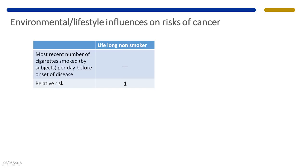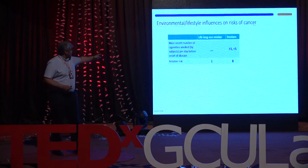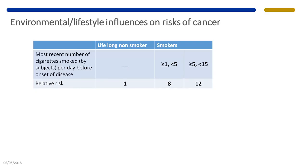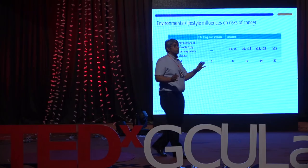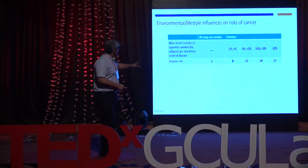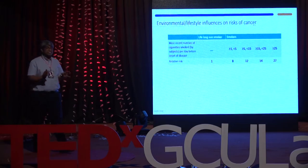The non-smoking-related lung cancer rate remains very low by comparison. If you take 100 people who have never smoked, one will develop lung cancer. Among people who smoke one to five cigarettes a day, that rises to 8 in 100; at 5 to 15 cigarettes, it's 12 in 100; at 15 to 25, it's 14; and among those who smoke more than 25 cigarettes a day, 27 out of 100 will develop lung cancer — a 27-fold increase in relative risk.